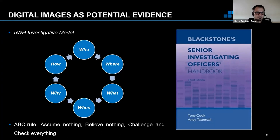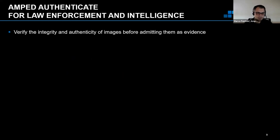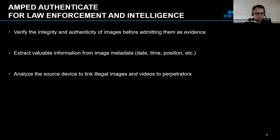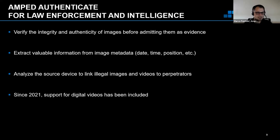With AMP Authenticate, you can verify the integrity and authenticity of images before admitting them as evidence — integrity and authenticity being very different things. You can extract valuable information from image metadata such as date, time, and position, and cross-check this information. You can analyze the source device to link illegal images and videos to perpetrators, just like camera ballistics. Since 2021, we've also added support for digital videos.